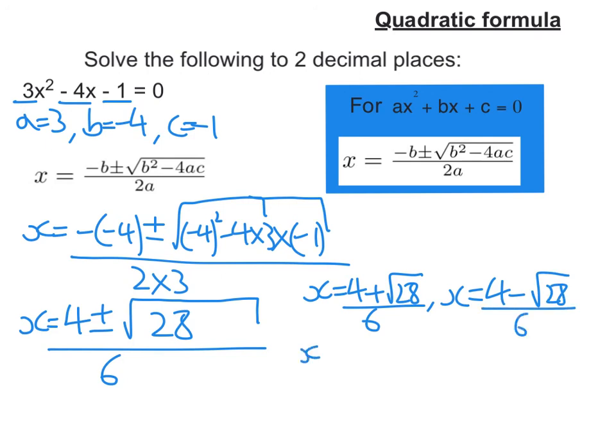Put those into my calculator. Remember to use brackets if I need to. You're going to get 1.54858, et cetera, and you're going to get negative 2.2152, et cetera. And if I was to do these two decimal places, as the question is asked, that's 1.55 and negative 0.22.